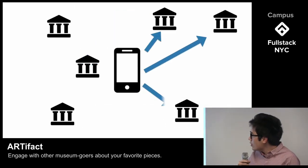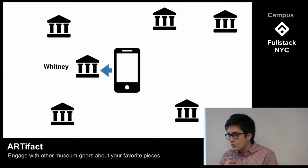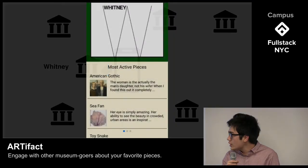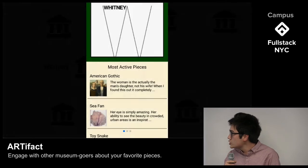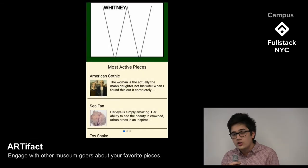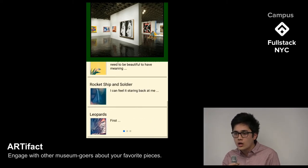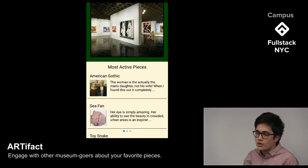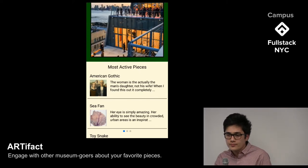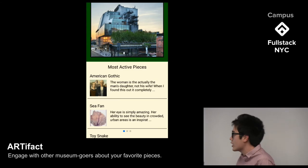After logging in, the first thing Artifact does is determine the museum the user is currently at. We do this by calculating the distance between each museum and the current location of the user. We then show a page of the museum with the most active pieces on it — these pieces are ordered by the aggregation of upvotes of each comment and their replies. Knowing the museum is also useful for narrowing the search space for the recognition algorithm down to one museum's collection, a few thousand pieces at most.